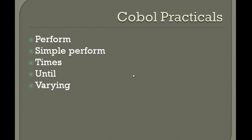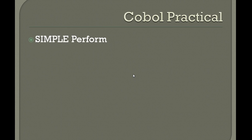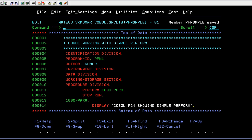We have simple perform, times, until, and varying perform. In this video, I'm going to show you how to use a simple PERFORM. Now let me connect you to the mainframe terminal to show you how to write a COBOL program using simple PERFORM. You are now connected to the mainframe terminal.